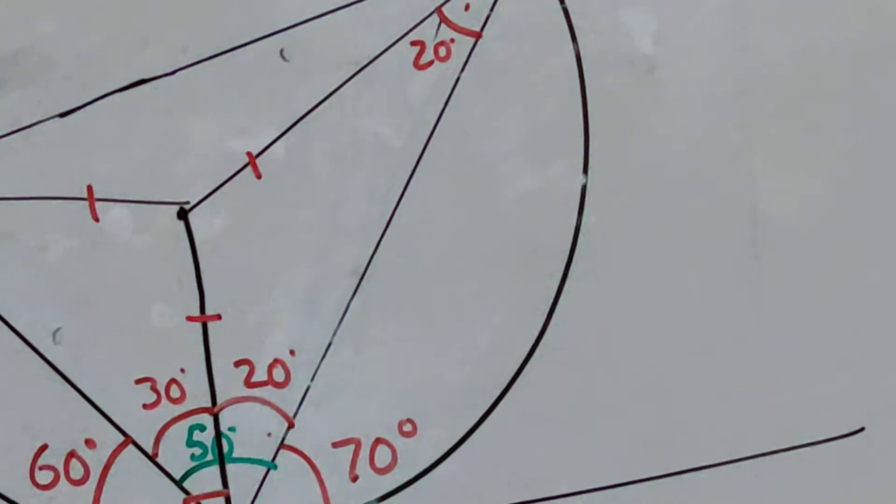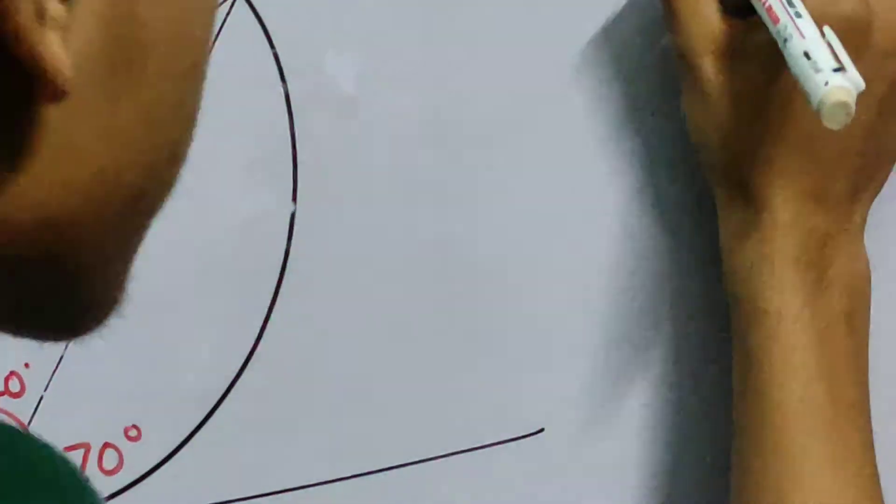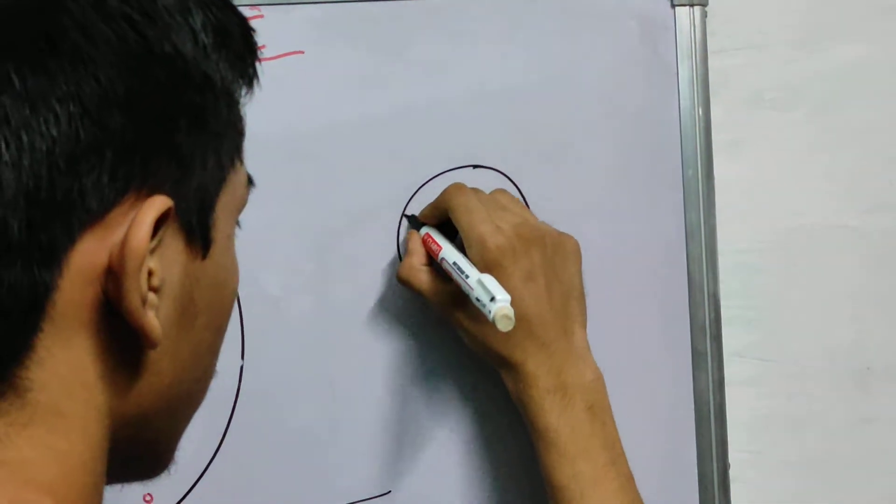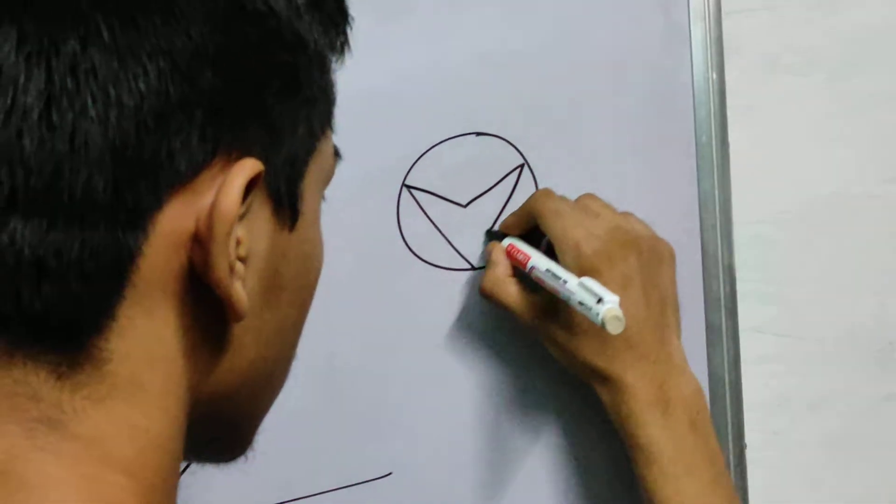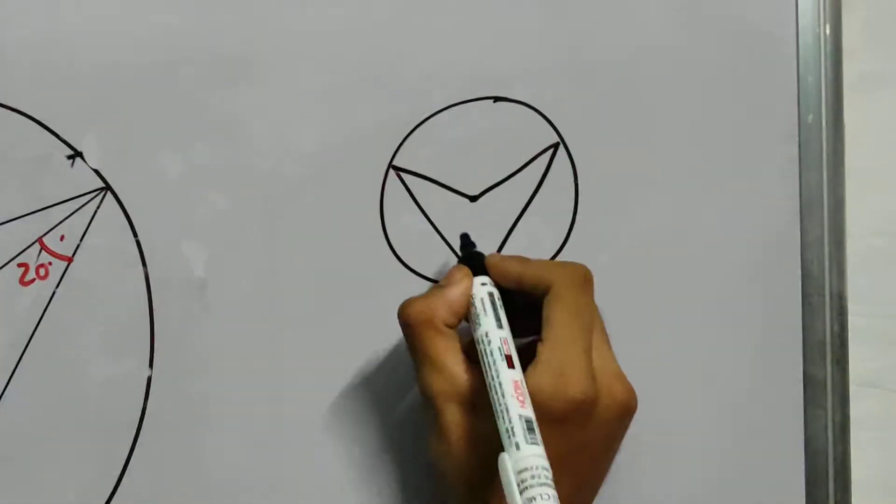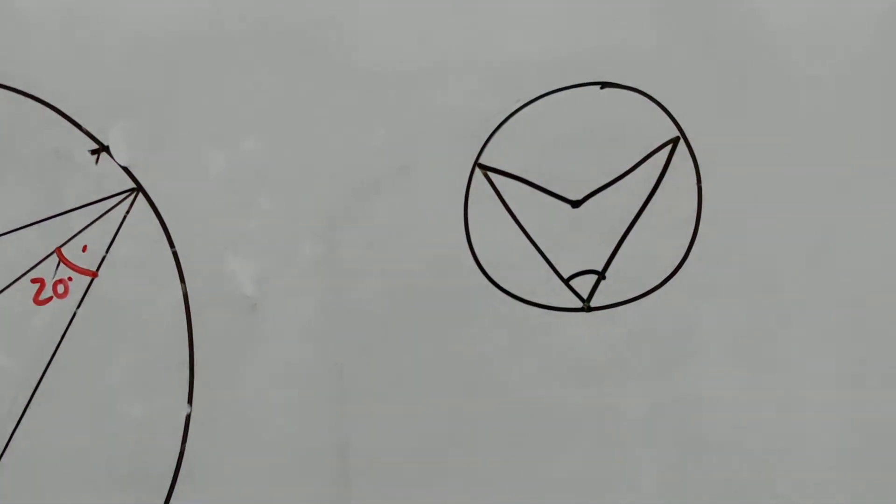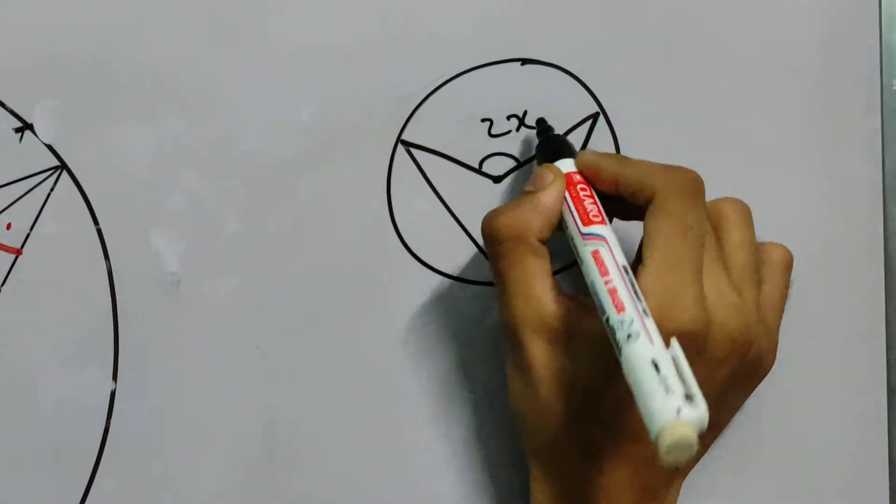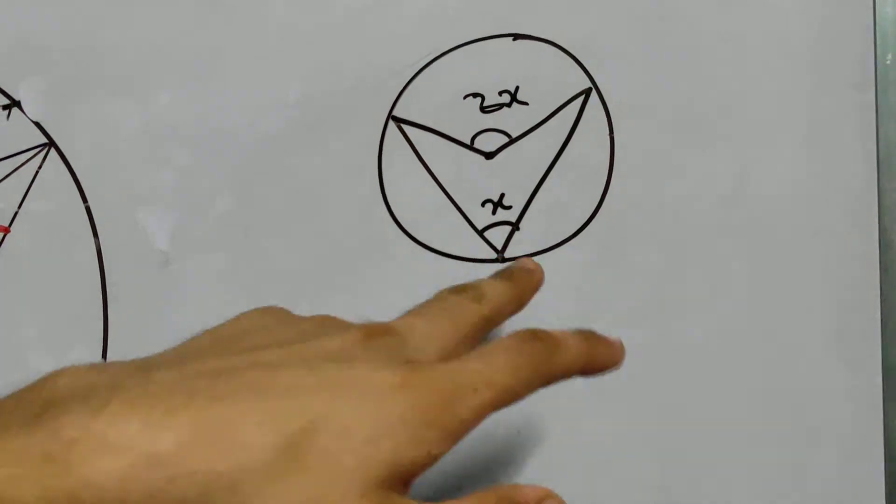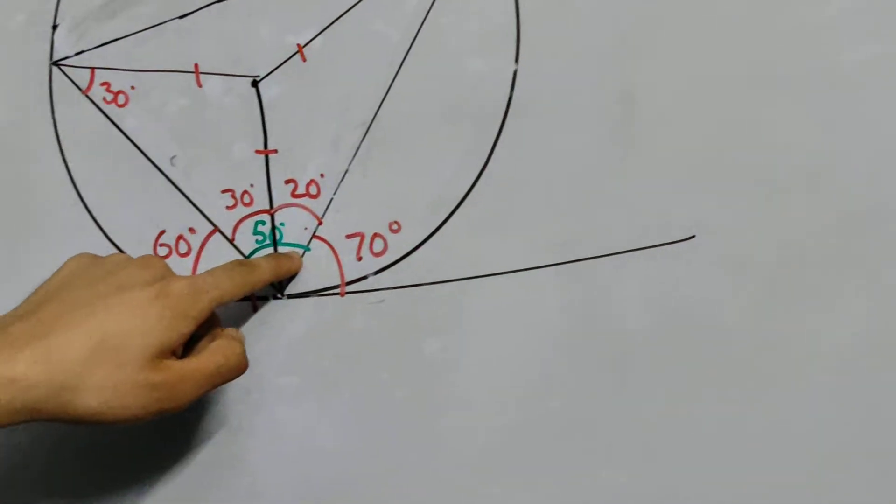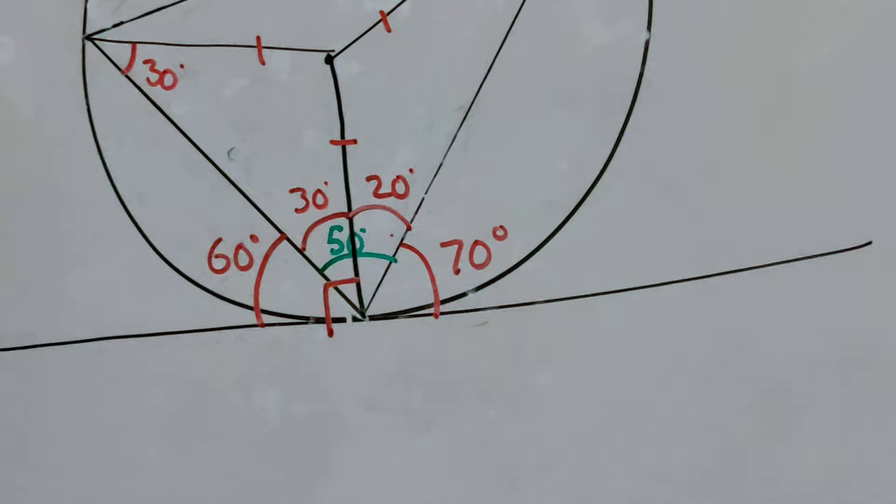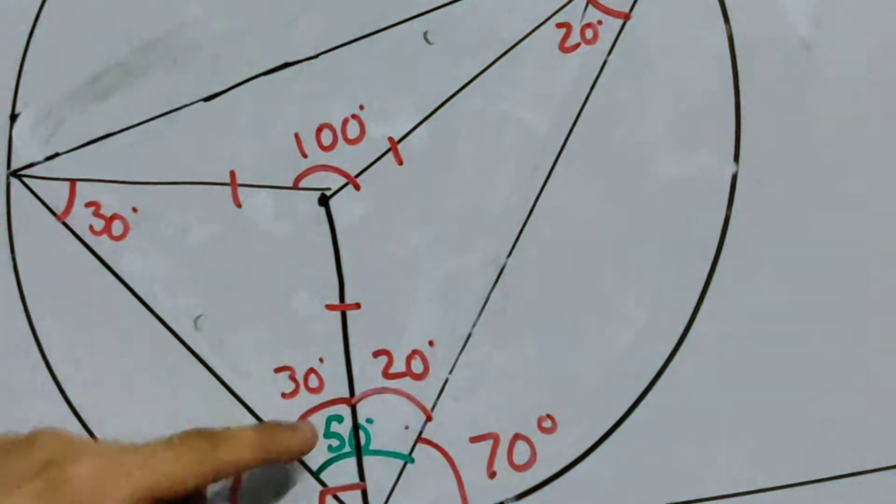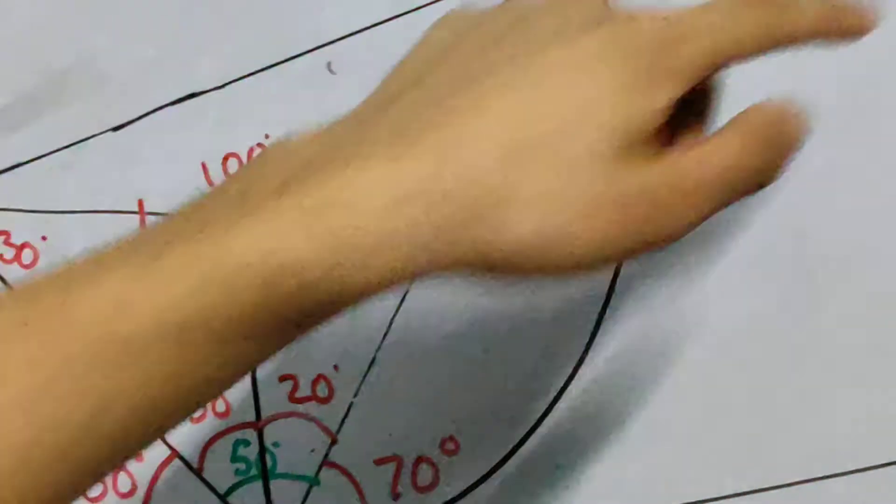I want you to remember this. This is a circle. And we have got something like this, this being the center. You might remember this from your standard property of circles. If this angle is x, this angle will be 2x. So if this angle is 50 degrees, this angle will be 100 degrees. 2x 50. 50 is this one. 100 is this one.